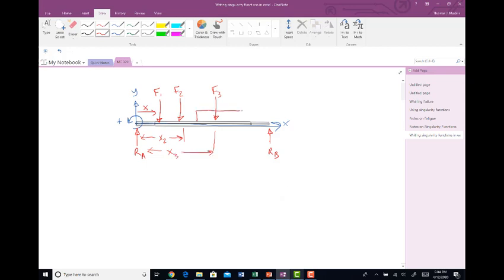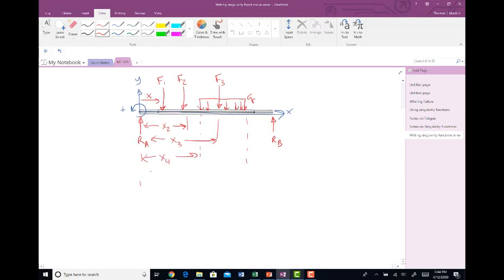And then I'm going to put a distributed load of load intensity Q, newtons per meter, pounds per inch, whatever you so choose. I'm going to have it start at x4 and end at x5.